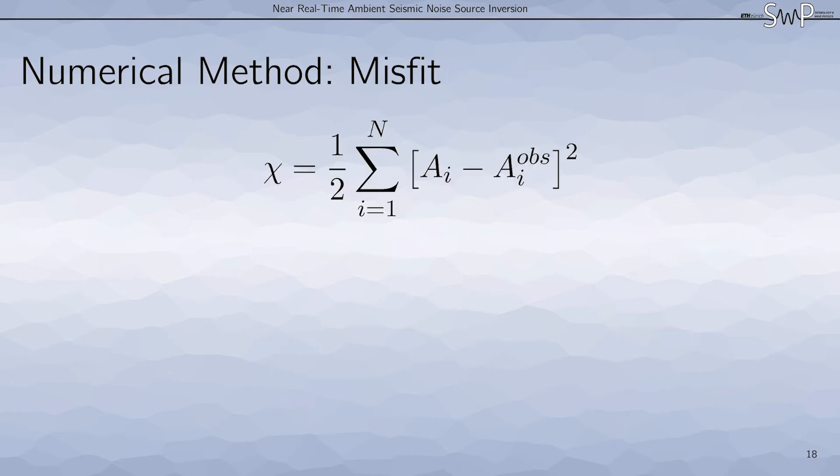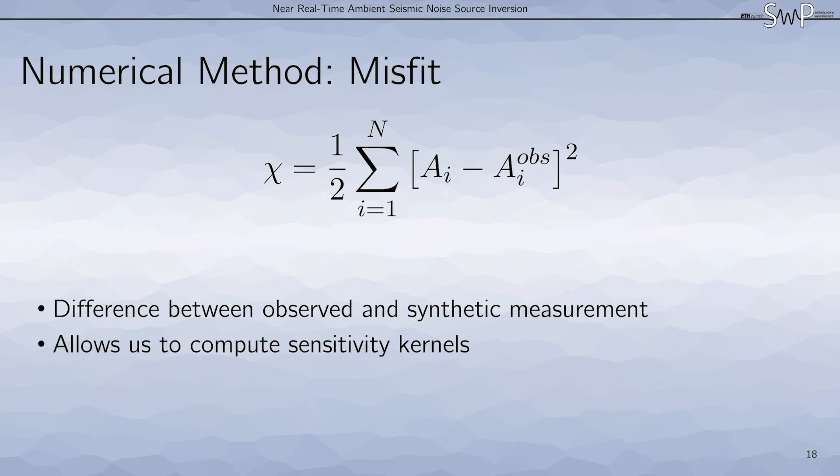To be able to perform an inversion, we need to define a misfit. The misfit is simply the difference between the observed and synthetic measurement. That means the smaller the misfit, the closer our model is to the data. This misfit allows us to compute sensitivity kernels, which we then use for the inversion.